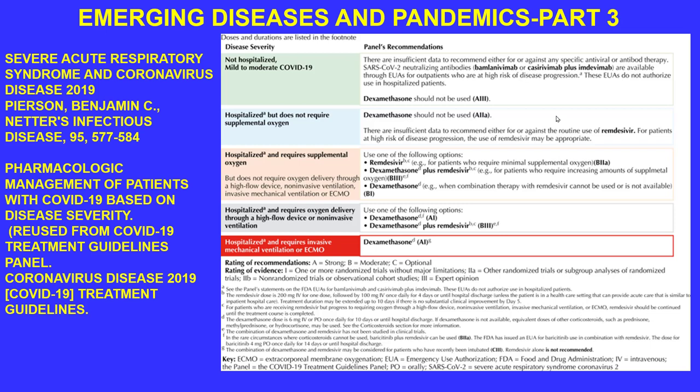Survivors of COVID were able to have their antibodies separated from blood donations and transferred to severely ill patients, helping hospitalized cases. Further down the severity scale, extracorporeal membrane oxygenation and more invasive procedures become necessary.